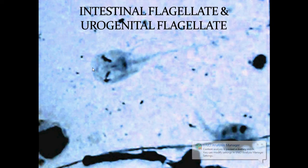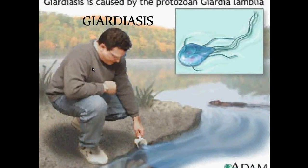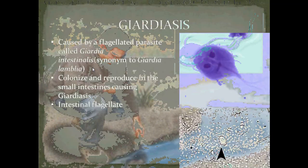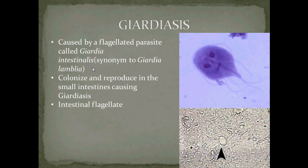This is Part 1 of our intestinal and urogenital flagellate lecture. In this lecture, we will focus on Giardiasis. Giardiasis is caused by the parasite Giardia intestinalis, also known as Giardia lamblia. They colonize and reproduce in the small intestines, causing Giardiasis.